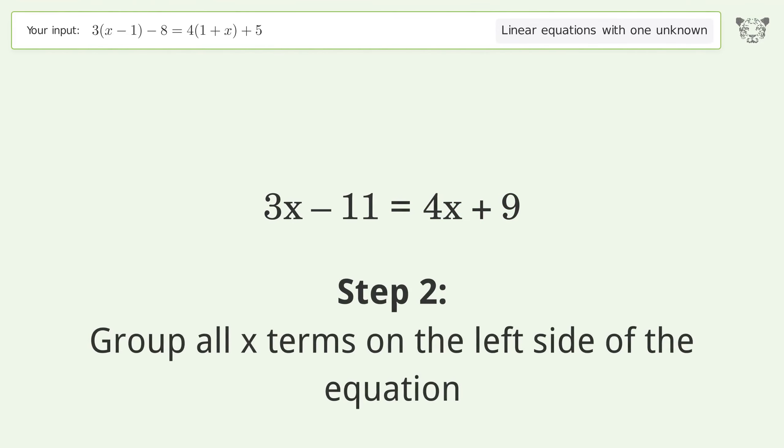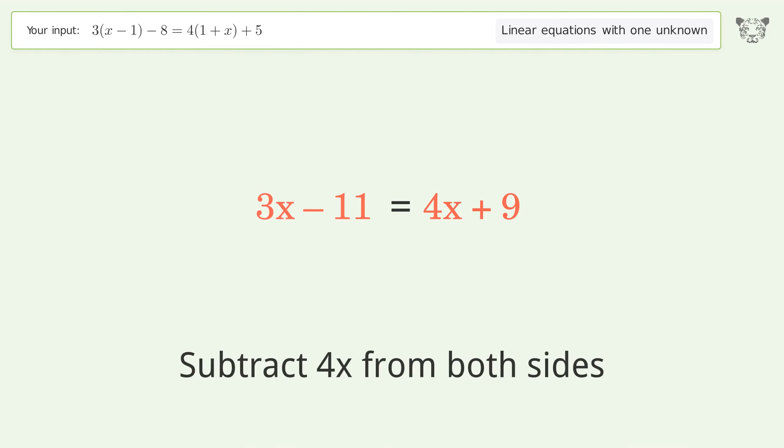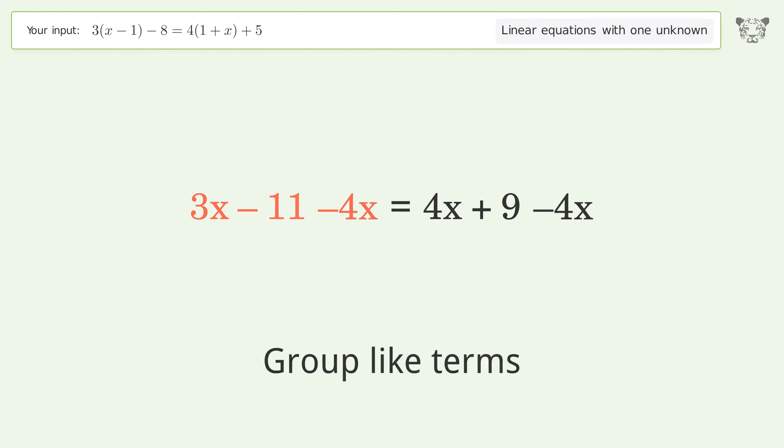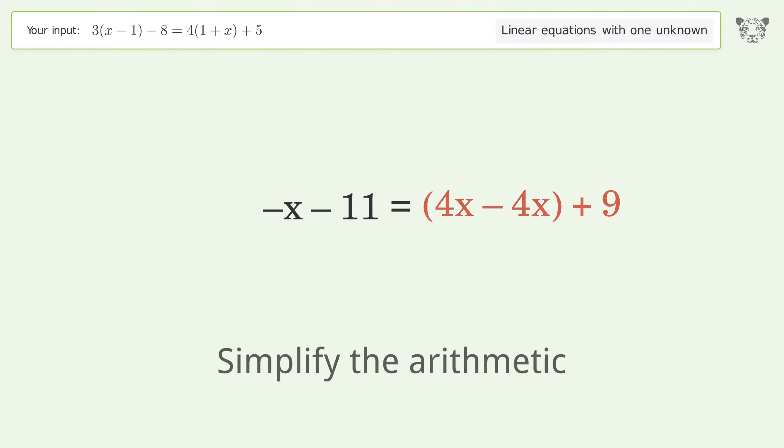Group all x terms on the left side of the equation. Subtract 4x from both sides. Group like terms and simplify the arithmetic. Group like terms and simplify the arithmetic.